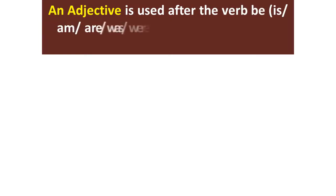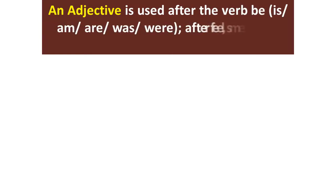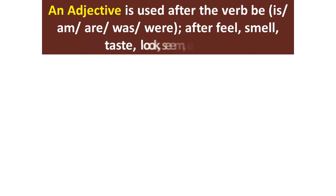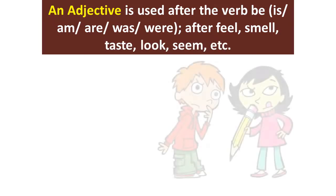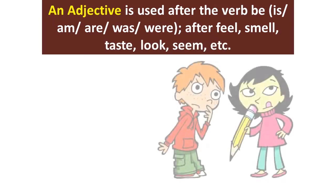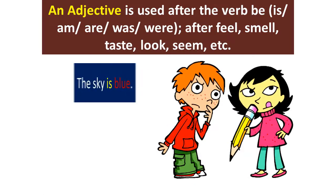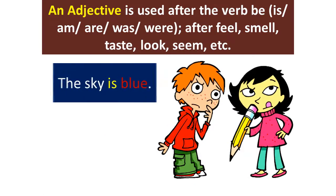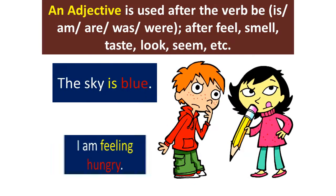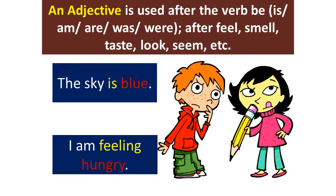The forms of 'be' include: is, am, are, was, were. Adjectives are also used after linking verbs such as feel, smell, taste, look, and seem. For example: The sky is blue.